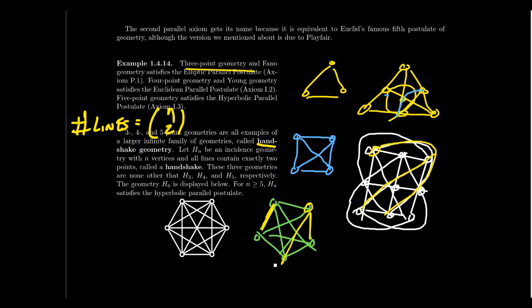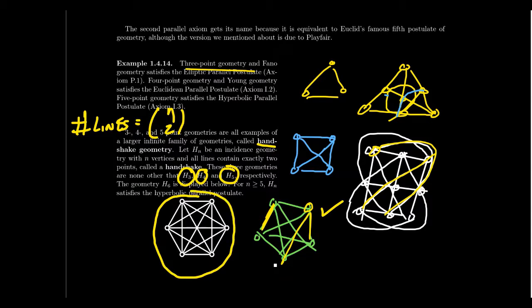Denoting handshake geometry on n vertices as H_n: H3 is three-point geometry with three choose two equals three lines; H4 is four-point geometry with four choose two equals six lines; H5 is five-point geometry with five choose two equals ten lines. On screen is the six-point handshake geometry with six choose two equals 15 lines.